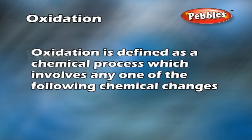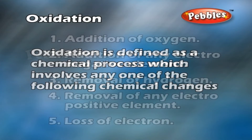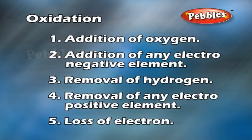Oxidation is defined as a chemical process which involves any one of the following chemical changes: addition of oxygen, addition of any electronegative element, removal of hydrogen, removal of any electropositive element, or loss of electron.